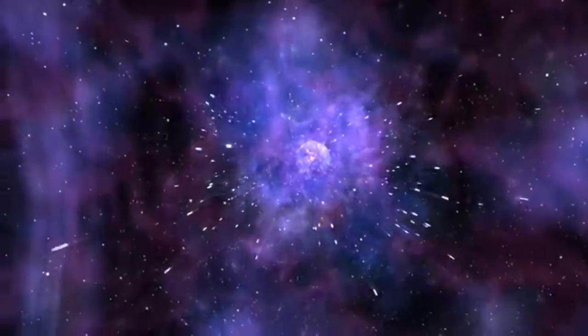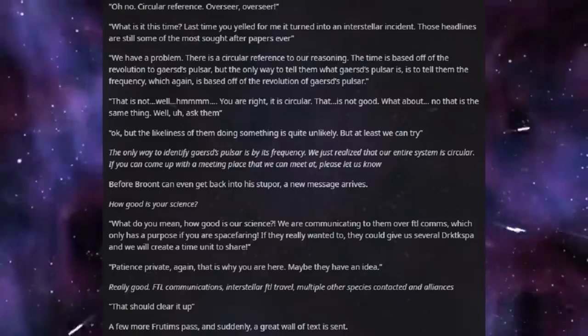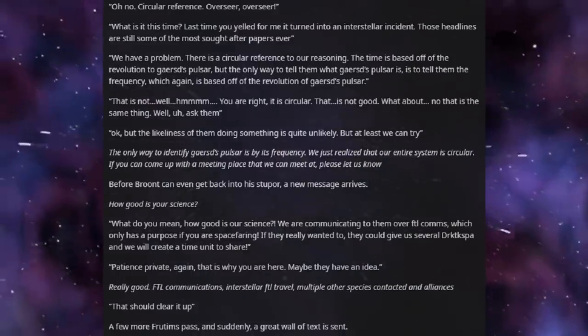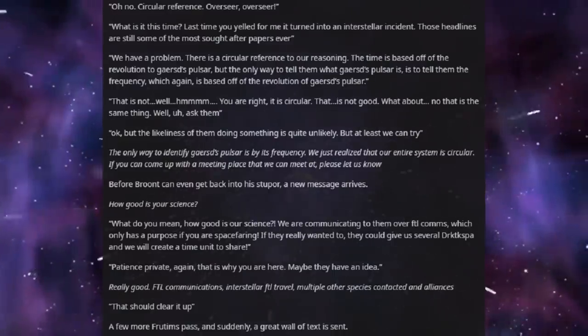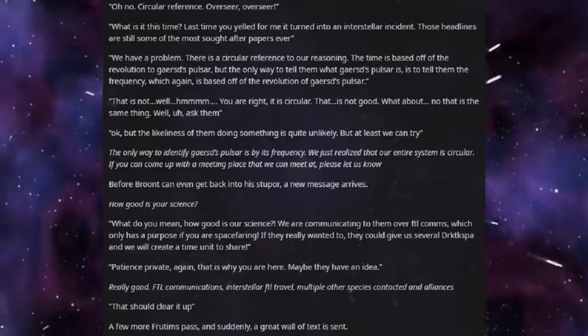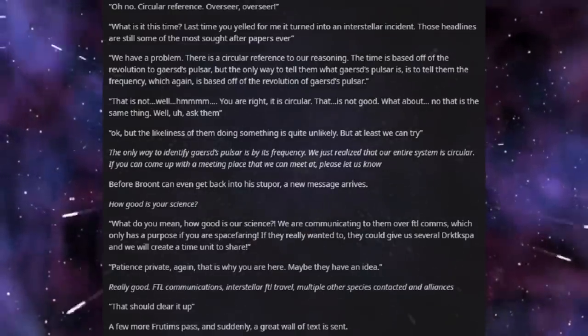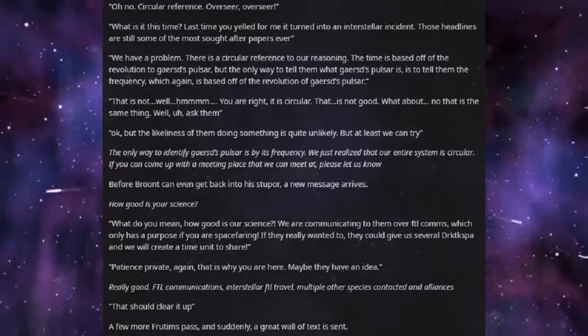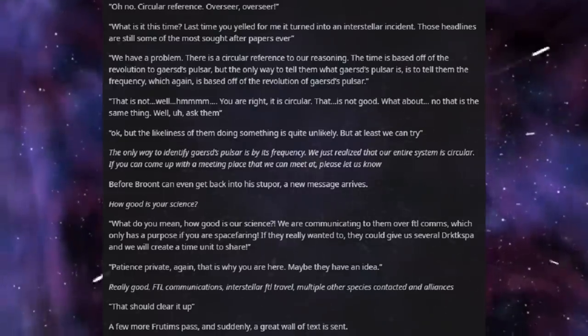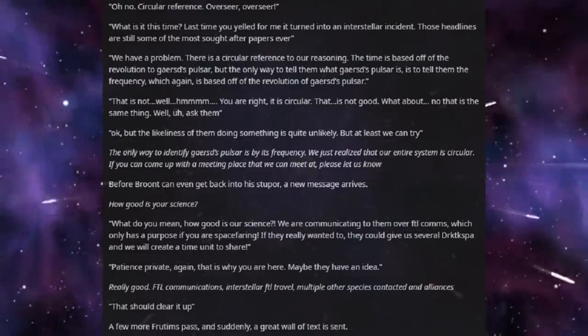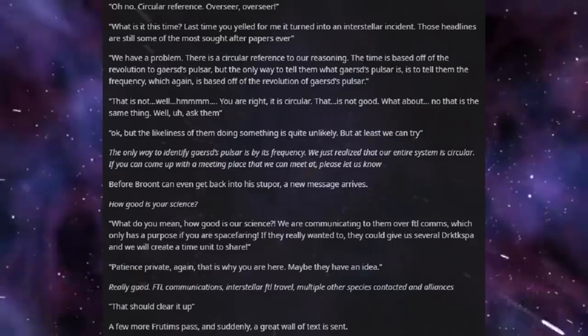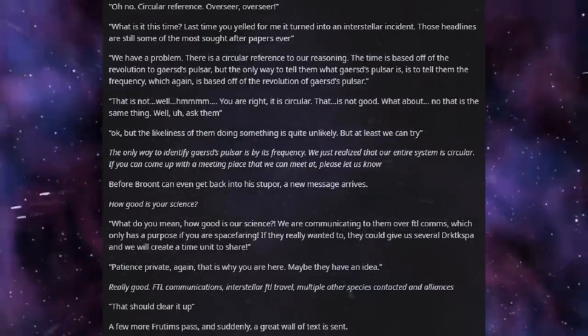The Overseer heads out and returns shortly to see Brundt staring despairingly at the note. I have returned with the dictionary. Here, just write the actual definition, the writers of this did a much better job than what I could try and paraphrase it as. Brundt takes the dictionary and starts relaying it through the antenna. Zolton. The smallest non-fractional unit of time measurement set to be the exact rotational period of Jared's pulsar. After punching this out, Brundt looks intently at the definition again, feeling that something is off. Going back into his listening stupor, he constantly turns over in his mind that something seems quite wrong. Where is Jared's pulsar? Oh no. Circular reference. Overseer? Overseer? What is it this time? Last time you yelled for me, it turned into an interstellar incident. Those headlines are still some of the most sought-after papers ever. We have a problem. There is a circular reference to our reasoning. The time is based off the revolution to Jared's pulsar. But the only way to tell them what Jared's pulsar is, is to tell them the frequency, which, again, is based off the revolution of Jared's pulsar. That is... no... well... you are right, it is circular. That is not good. What about... no. That is the same thing. Well... ask them.